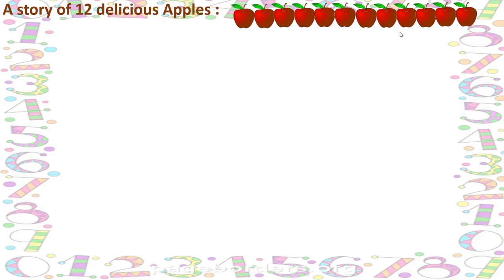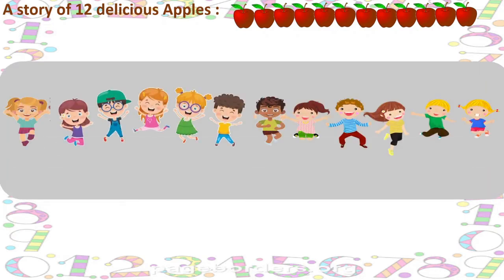First, we will go through a story — a story of 12 delicious apples. Fresh and delicious apples. You can see here 12 red, delicious, fresh apples. We want to distribute these among some children. They are very happy because they know they will get apples.